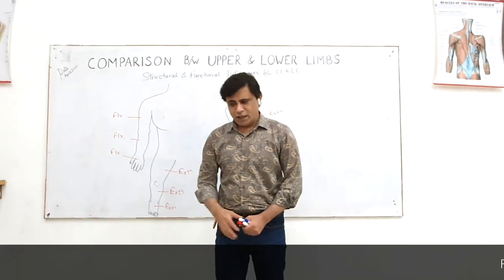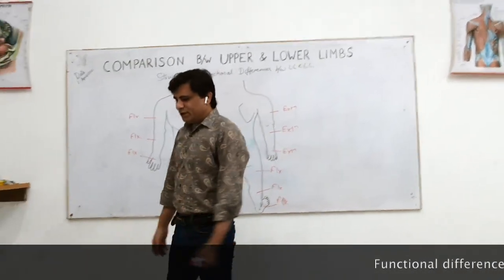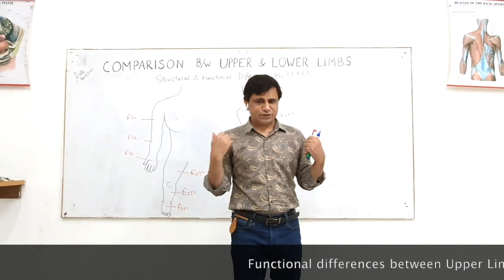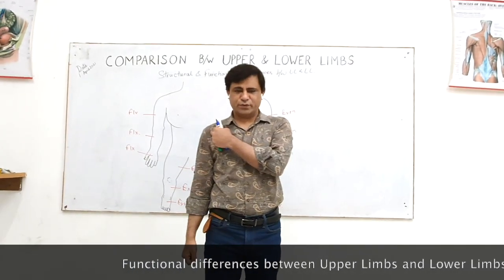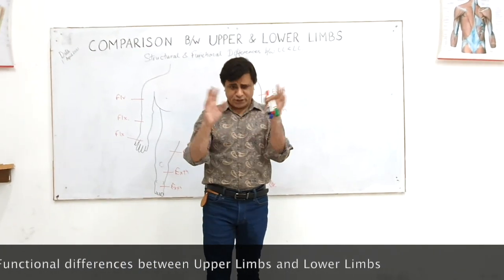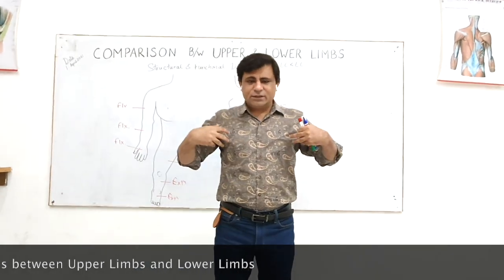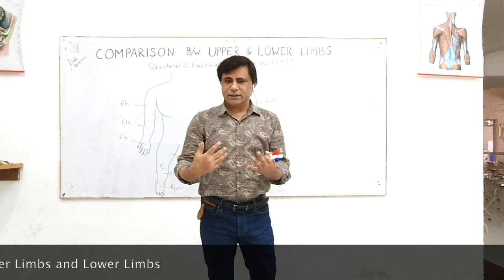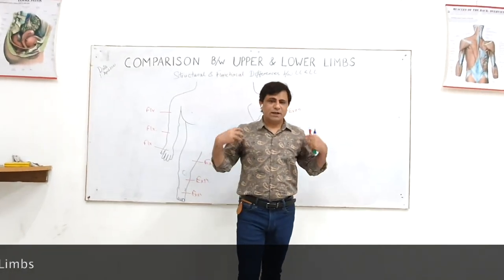Now think about the axis of movement. Normally flexion is forward bending of joints — for example, forward flexion at the shoulder joint. The movements of the joints will also be 180 degrees opposite, except at the hip and shoulder joint — remember this, it is very important.